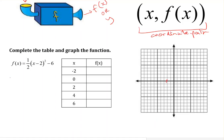I simply evaluate f of negative 2 by plugging negative 2 in for x. One half times negative 2 minus 2 squared minus 6. That's negative 4 squared, which is 16. Half of 16 minus 6 is 8 minus 6 or 2. So when x is negative 2, the function will equal 2. And we can place that coordinate onto our graph.